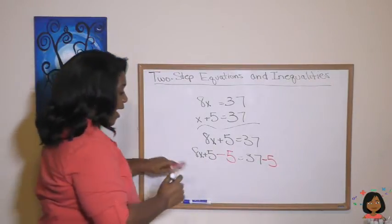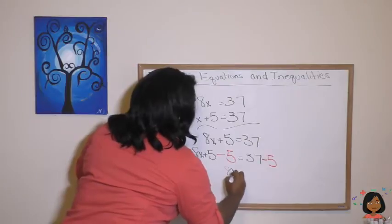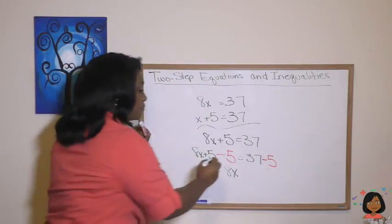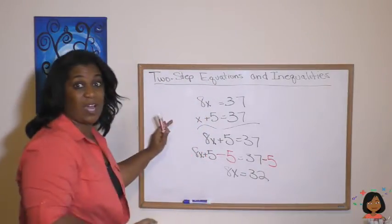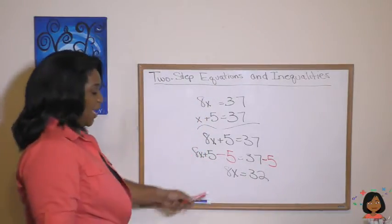Let's keep it going. What do we have left? 8x is on the left side. 37 minus 5 is 32. So that was our one step. Let's do our second step now.